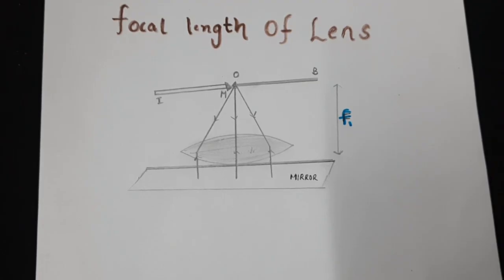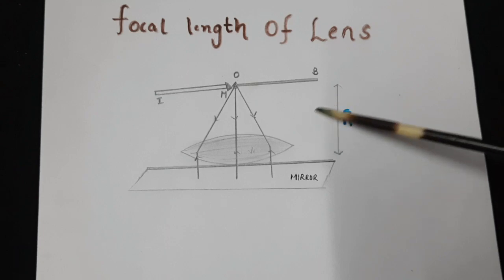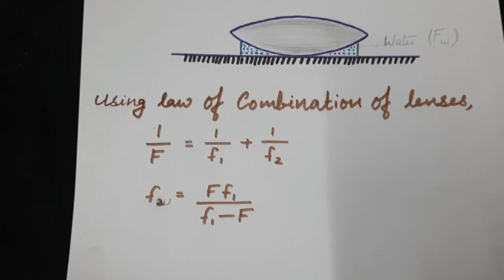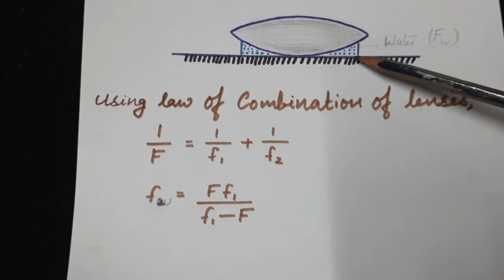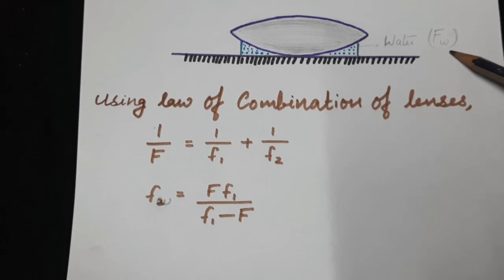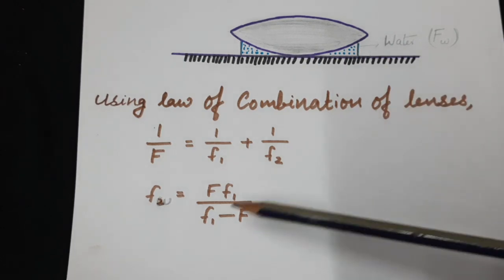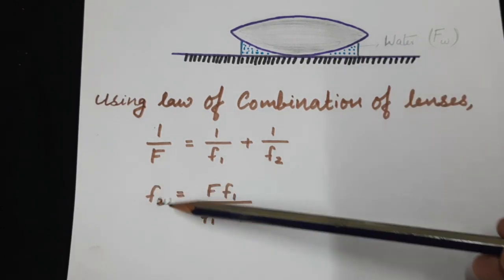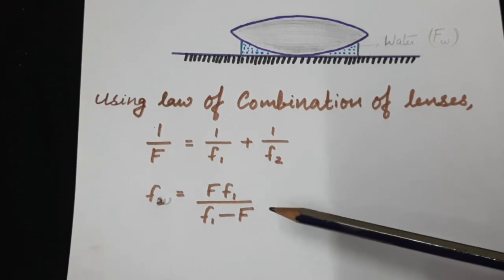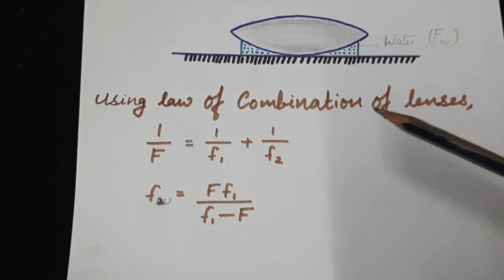The first stage of this experiment would be to find out the focal length f1 of the convex lens, as explained in the previous experiment. The second stage of the experiment would be to make a liquid lens with water. So if capital Fw is the combination focal length with water, then from that we can find out the focal length of this water lens: f = F·f1 / (f1 minus F). Here we have made use of the law of combination of lenses.